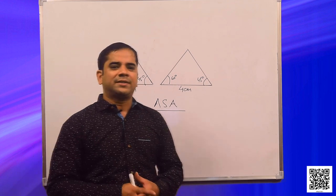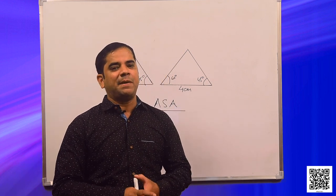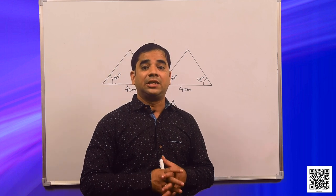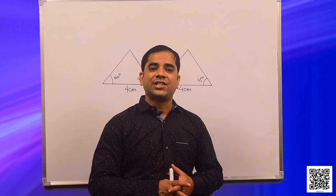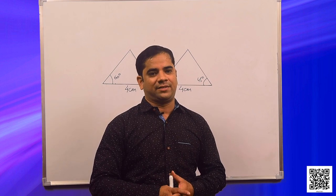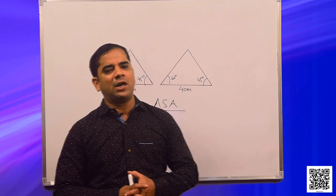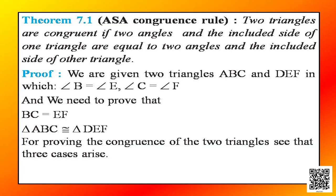Since this result can be proved, it is called a theorem. To prove it, we use the SAS axiom for congruence. Theorem 7.1 — ASA congruence rule: two triangles are congruent if two angles and the included side of one triangle are equal to two angles and the included side of the other triangle. Let us prove it.